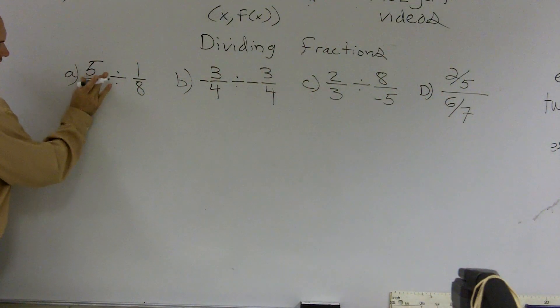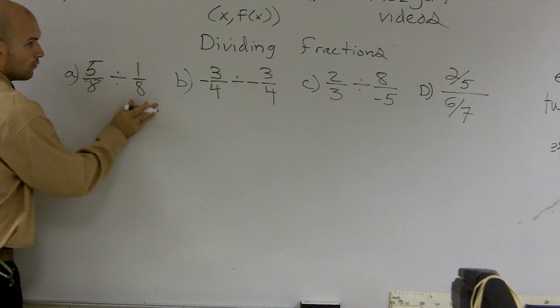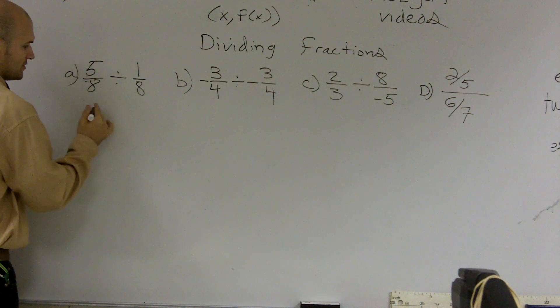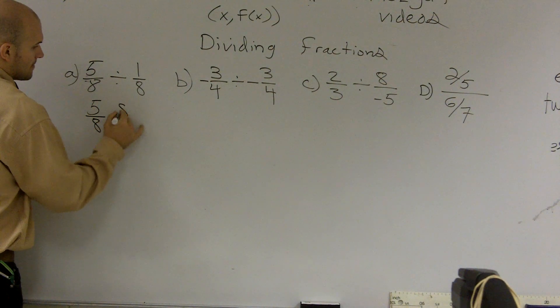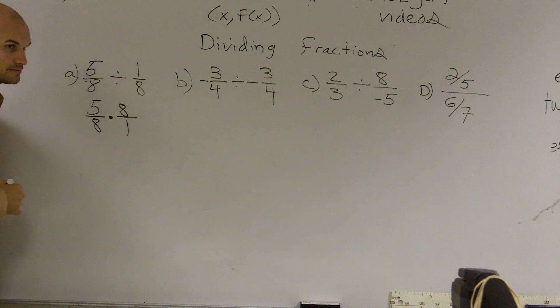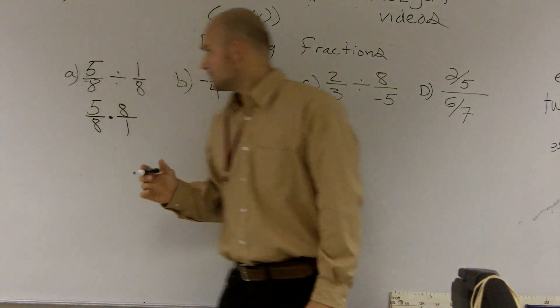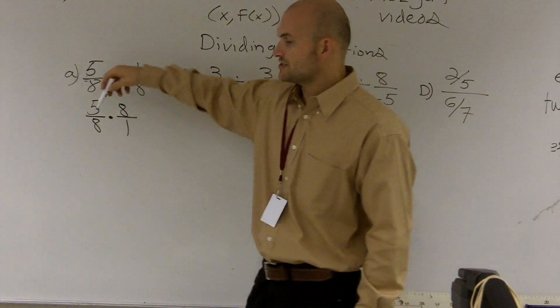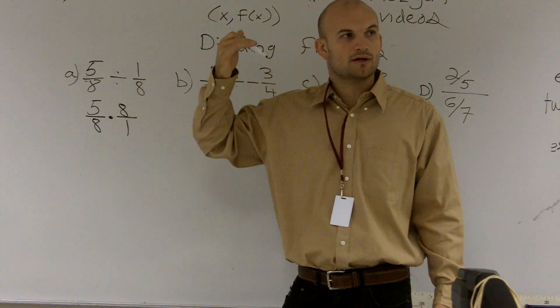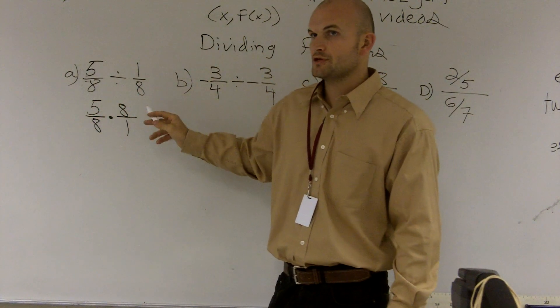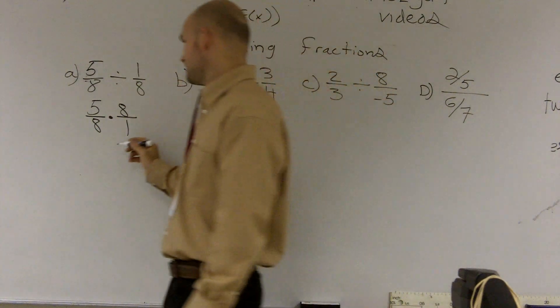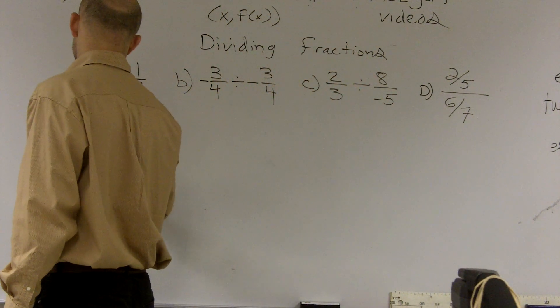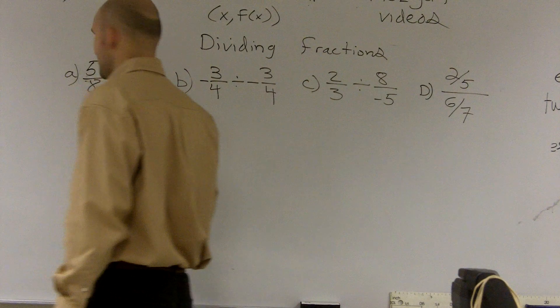So on my example, I have 5/8 divided by 1/8. So what I'm going to do is I'm going to change it to a multiplication problem. So then, now that I've changed it to a multiplication problem, if I remember multiplication, I multiply the numerator times the numerator, the denominator times the denominator. 5 times 8 is 40. 8 times 1 is 8.